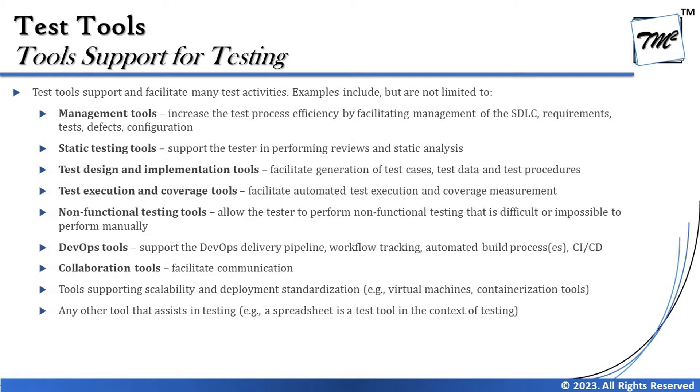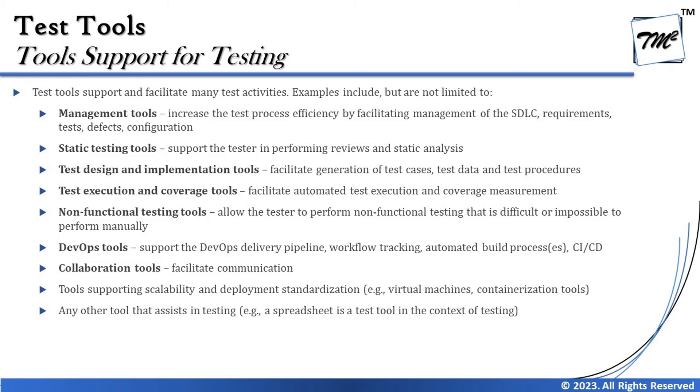We also have DevOps tools, as discussed in previous tutorials. DevOps tools support the delivery pipeline workflow, tracking, and automated build processes of CI/CD. These tools build the pipeline required to perform automated executions of things including unit testing, integration testing, build verification tests, static analysis, and other steps. As and when code is checked in, each trigger kicks off, performing the steps and letting you know exactly where a failure happened.